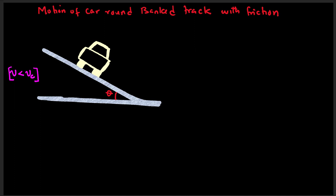If we do the free body diagram, we have the weight acting vertically downwards, the normal force perpendicular to the surface, and the friction force acting outwards — outwards, as long as the speed of the car is below the critical speed.